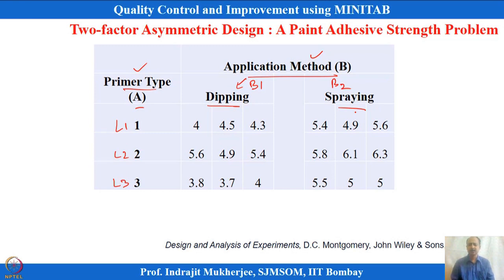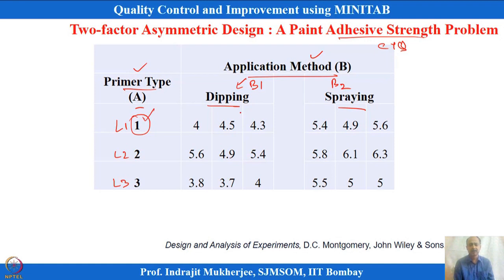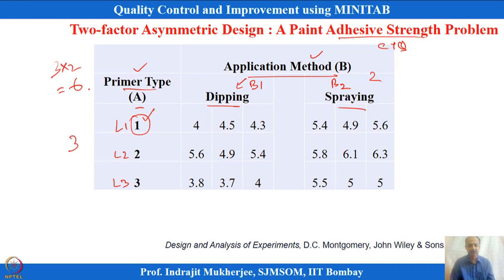The experimenter wants to figure out what is the best combination of primer type and application method that will maximize the adhesive strength, which is the CTQ. Since primer type has three levels and application method has two levels, there are 3 × 2 = 6 possible combinations to explore.